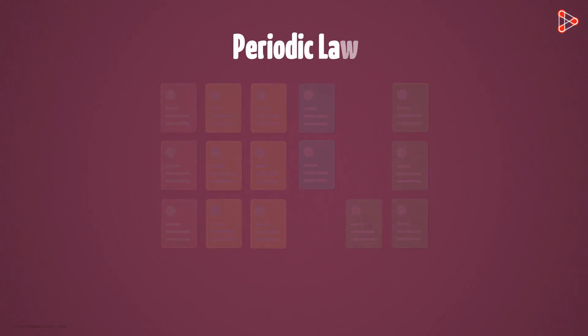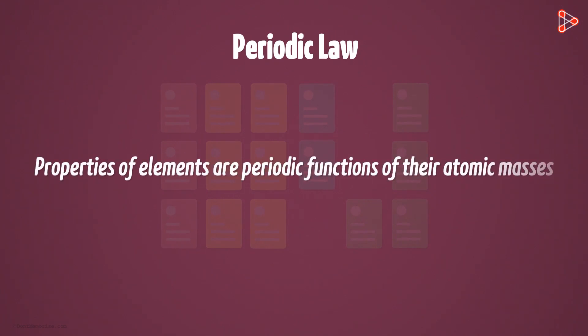With this, Mendeleev came up with a law. He named it as the periodic law. The law stated that properties of elements are periodic functions of their atomic masses.